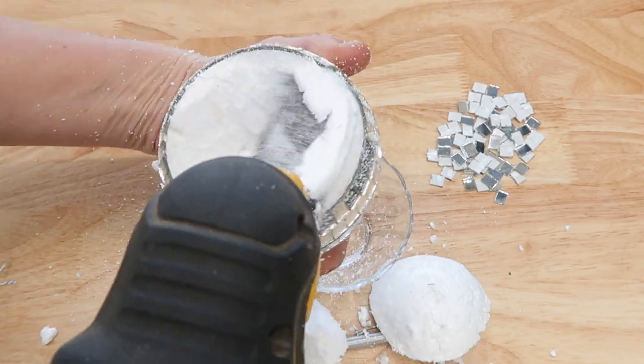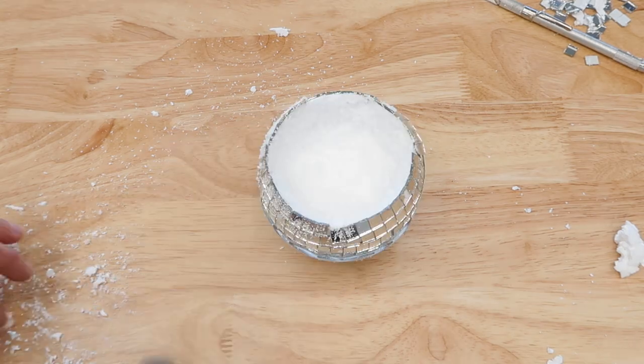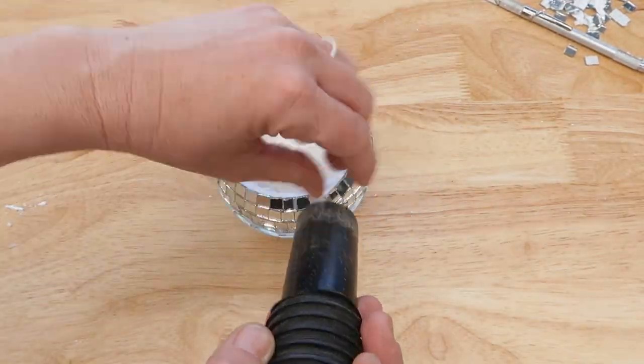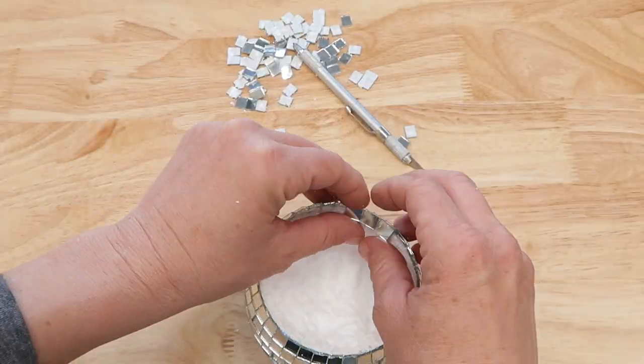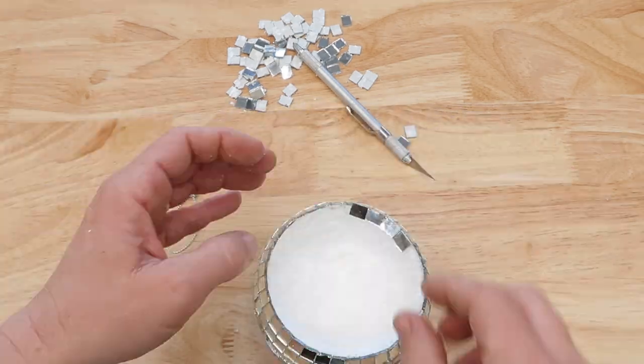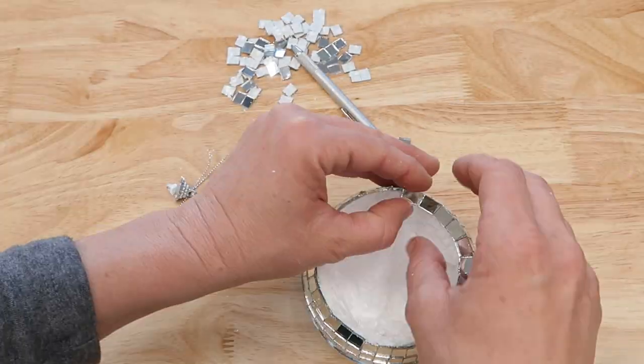Once I was satisfied with the way the inside of the planter looked, I came back in and cleaned all that mess up with my shop vac, and then proceeded to glue back on the mirrors that I took off, giving myself a nice little border or rim around the inside of the planter.